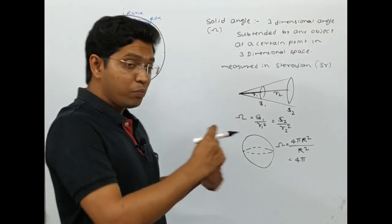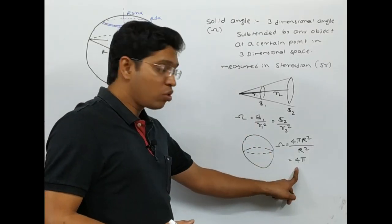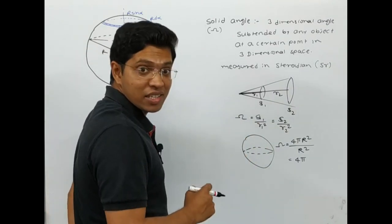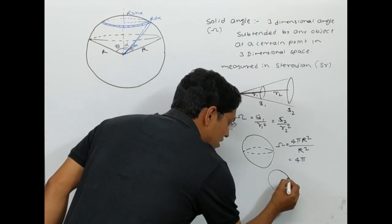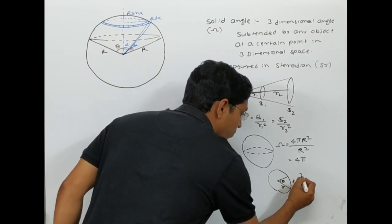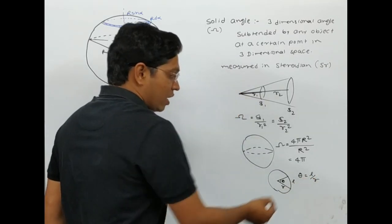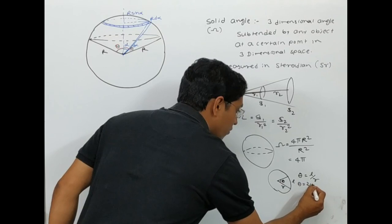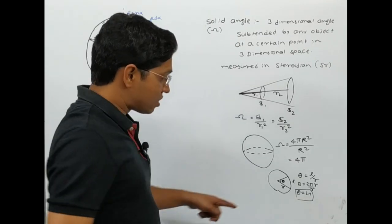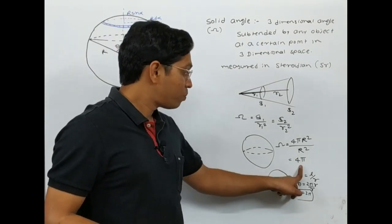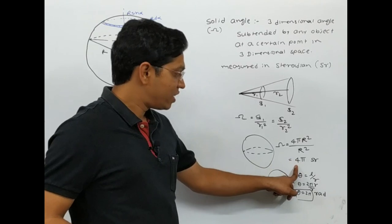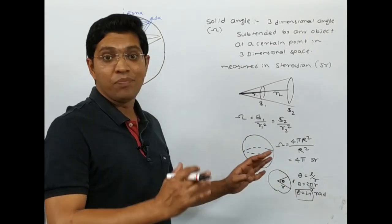It means the complete sphere subtends an angle of 4π steradians as a solid angle at the center, and it will subtend the same angle anywhere inside the sphere. Similarly, if I consider a circle and go for the linear angle — where theta is L divided by R — and I consider the complete circumference, then theta will be 2πR divided by R, and hence theta equals 2π radians. So 2π radians is the angle subtended by the circle, and 4π steradians (denoted SR) is the solid angle subtended by the sphere.